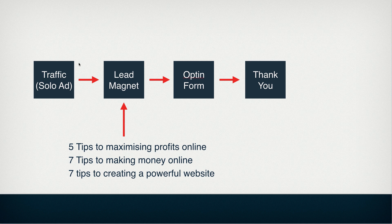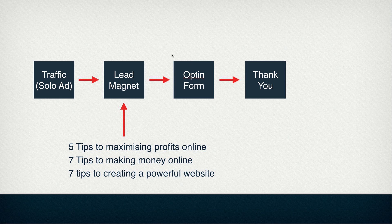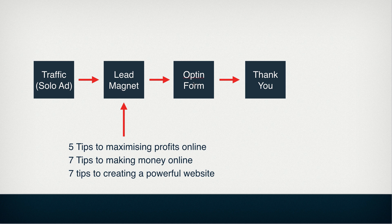This is what we mean by the hundred-dollar-a-day method. You get traffic — we used solo ads in that video as an example — and then you have a lead magnet, so you offer something for free, like five tips on maximizing profits online, seven tips to make money online, seven tips to creating a profitable website. It really depends on your niche, but I'm talking about the make-money-online niche because that's usually what solo ads are about. Then you create an opt-in form where you collect emails, and then you create a thank-you page afterwards where you can have a link to download the lead magnet, or you can put the lead magnet in your autoresponder. In this video we're going to concentrate on creating a lead magnet and an opt-in form, and I'll do another video on the thank-you page.